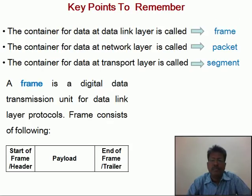Key points to remember: the container for data at the data link layer is called a frame. The container for data at the network layer is called a packet, and the container for data at the transport layer is called a segment. The information available at the application layer is called data or information.